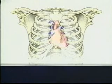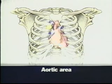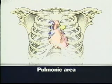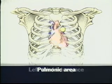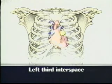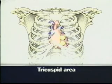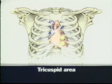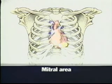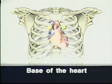You can hear S1 and S2 in the aortic area in the right second interspace close to the sternum, the pulmonic area in the left second interspace close to the sternum, the left third interspace, the tricuspid area in the left fourth and fifth interspaces, and the mitral area at the apical impulse. The aortic and pulmonic areas together are sometimes called the base of the heart.